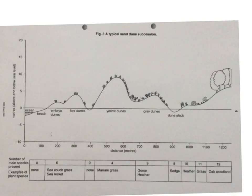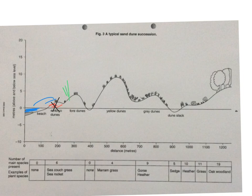This diagram shows it nicely. We have the sea at the front. These are the little embryo dunes. One of the problems here is that large destructive waves will destroy those sand dunes, making it very difficult for marram grass to grow. Marram grass is a pioneer, a coloniser at the front of these dunes, because it has a waxy skin that stops transpiration.